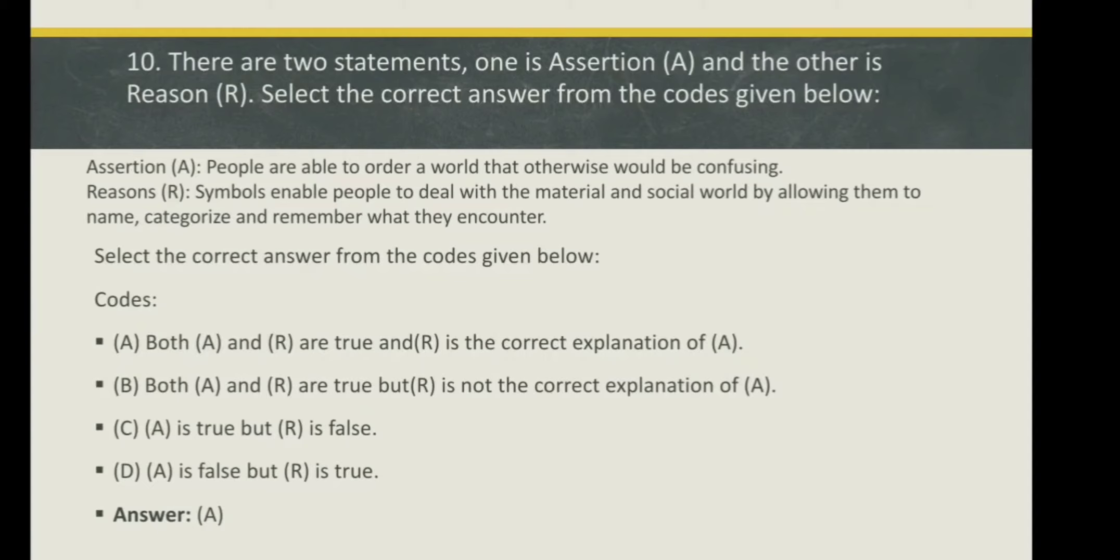Select the correct answer from the codes given below. Here the codes are: Option A: Both A and R are true and R is the correct explanation of A. Option B: Both A and R are true but R is not the correct explanation of A. Option C: A is true but R is false.